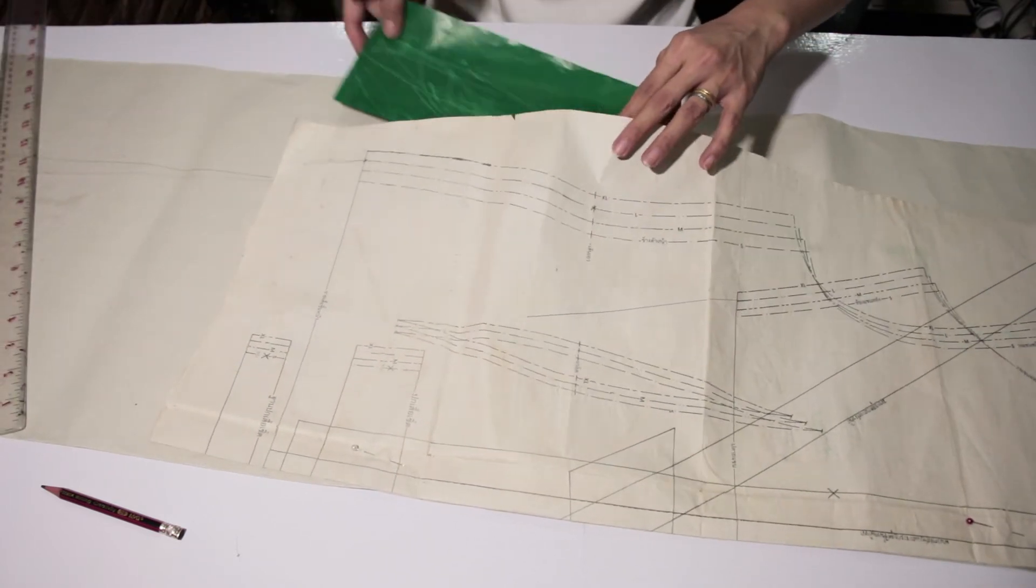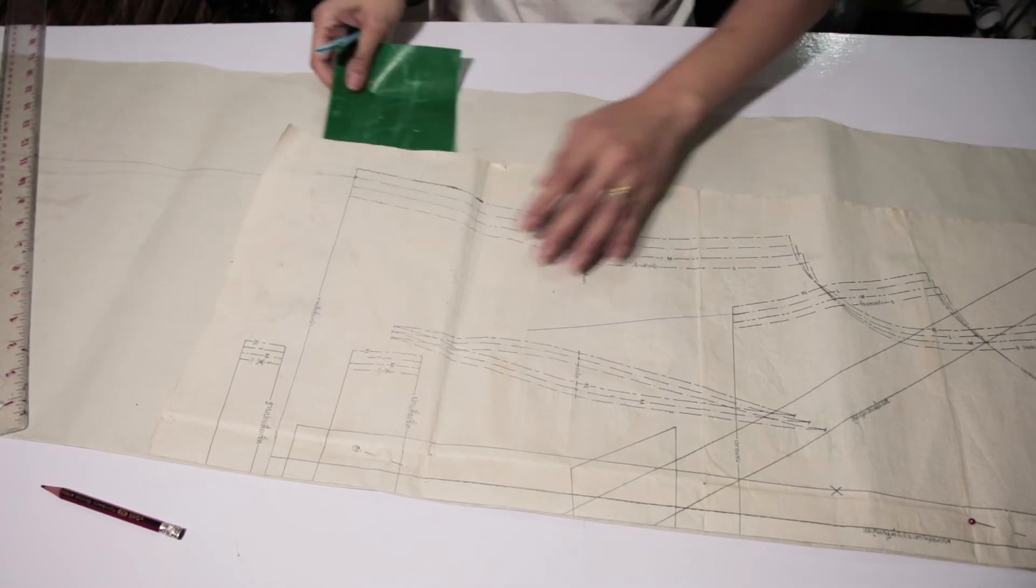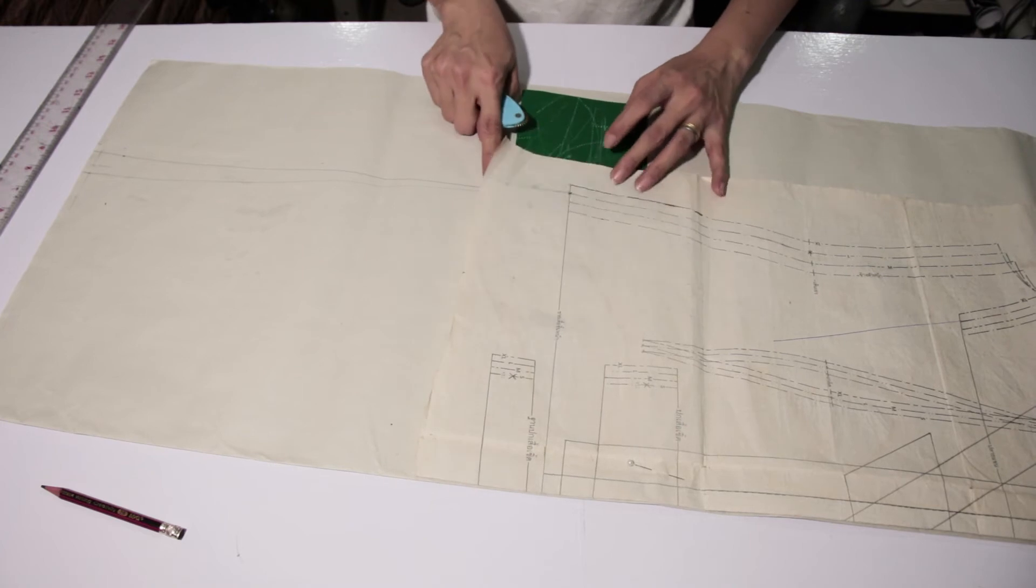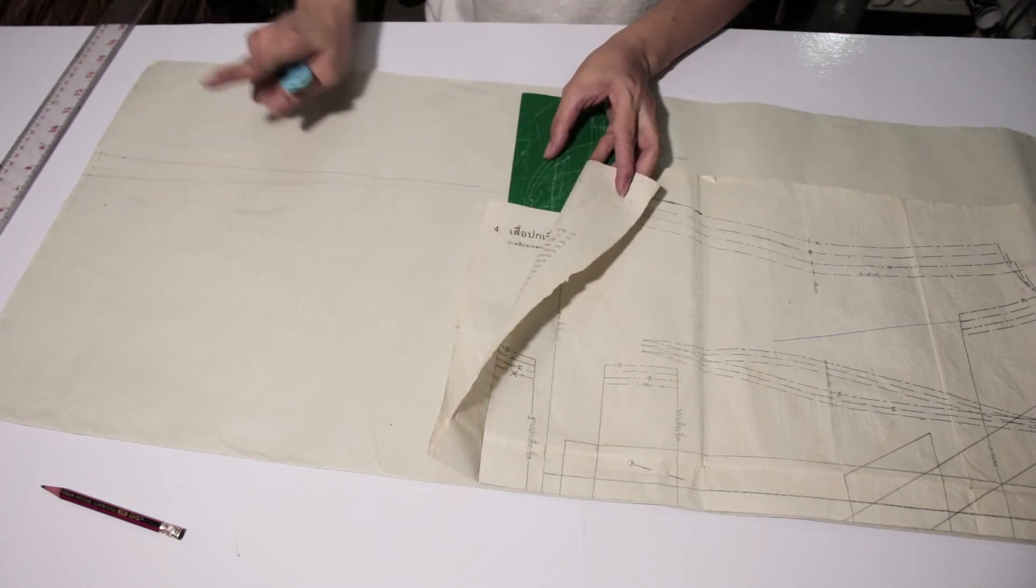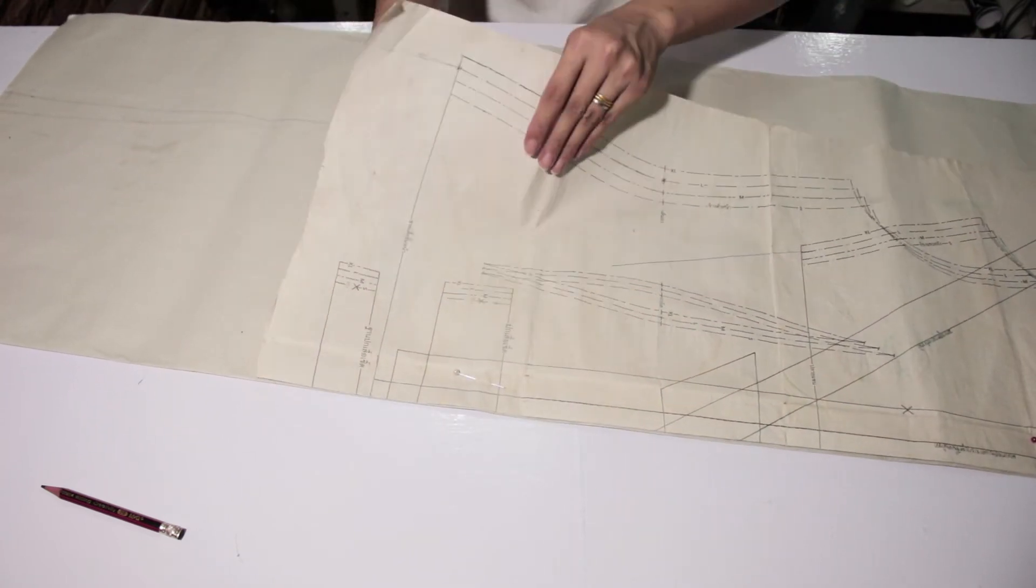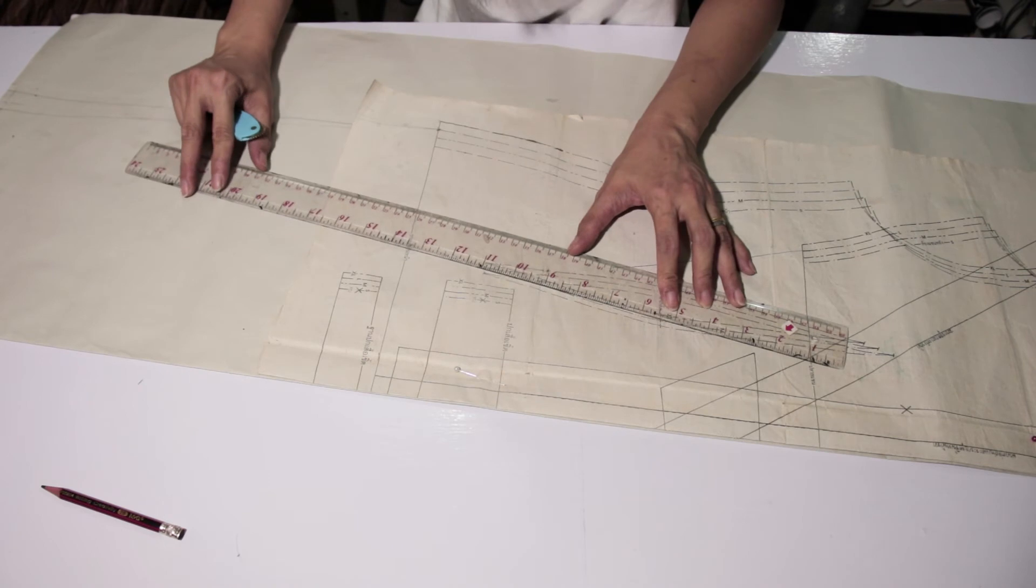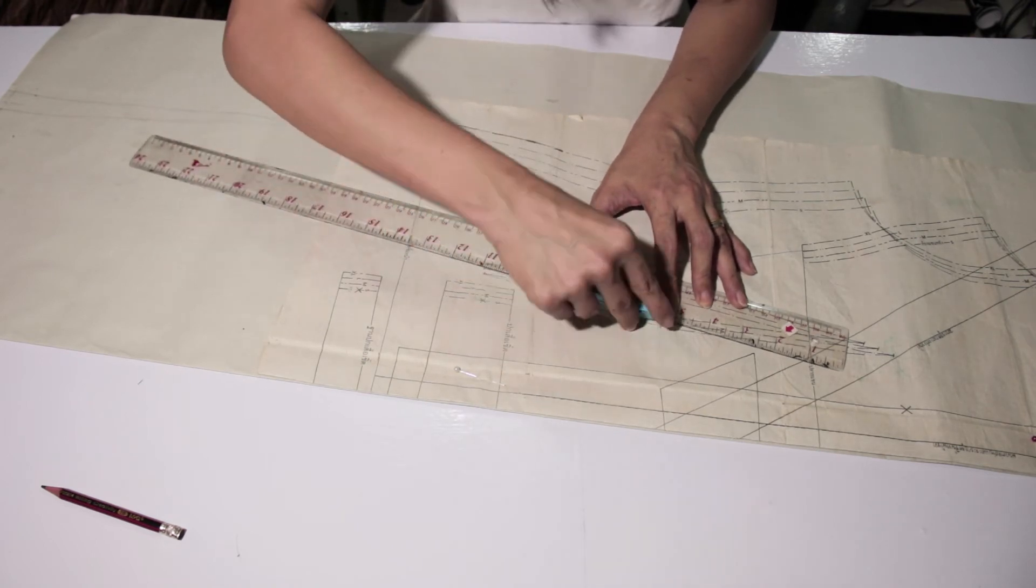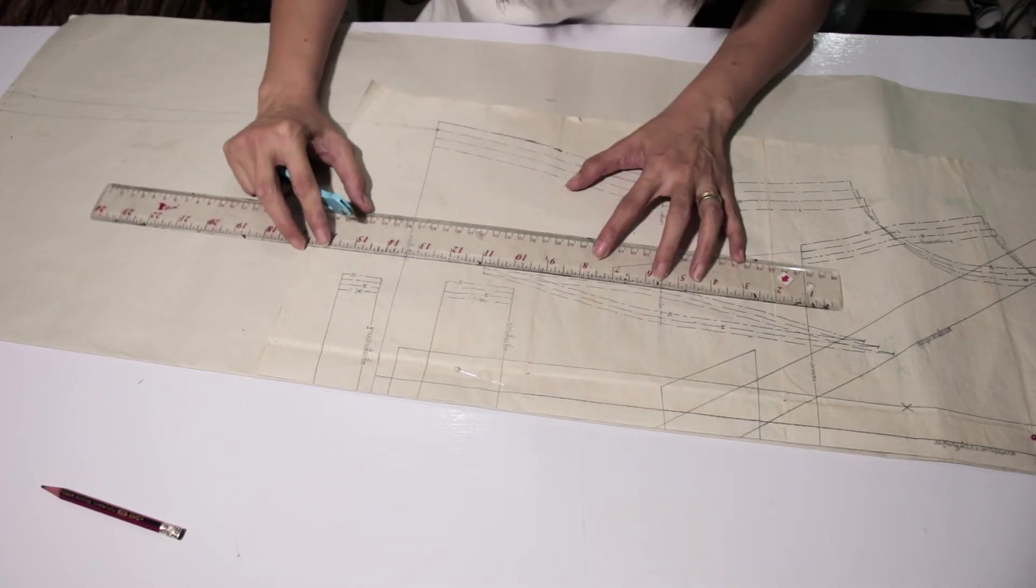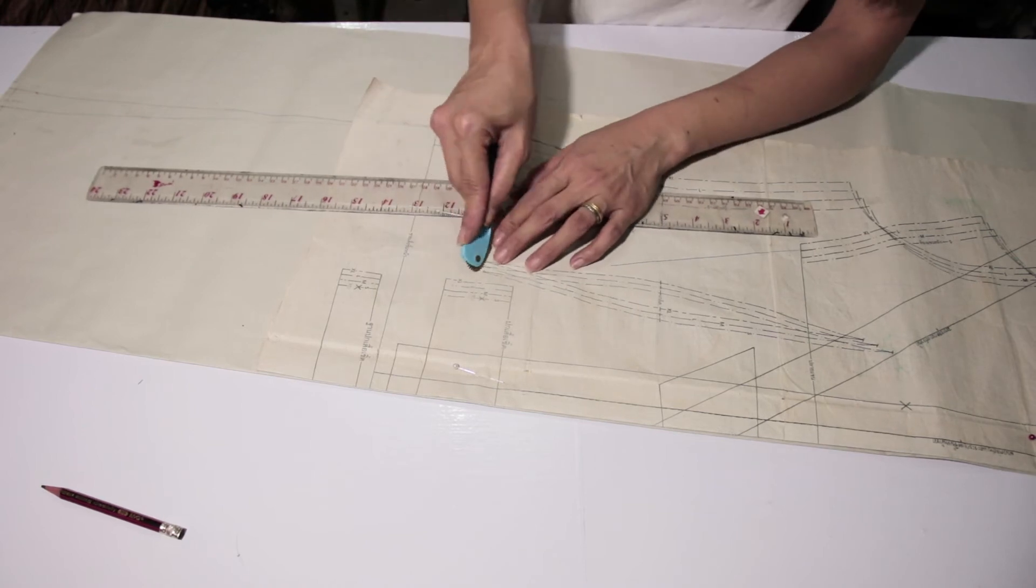And then before you forget, trace the waistline there and trace the hip line there. And because we already drew the line here, we don't have to do it again. And here, don't forget your double darts. And here's M. So just use your ruler again. Where's the M? A bit curve.